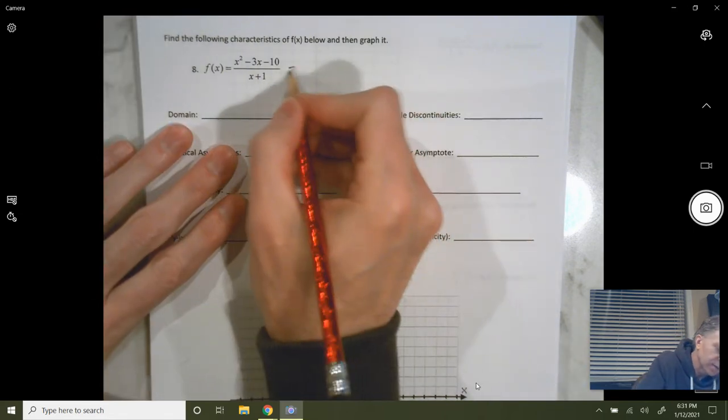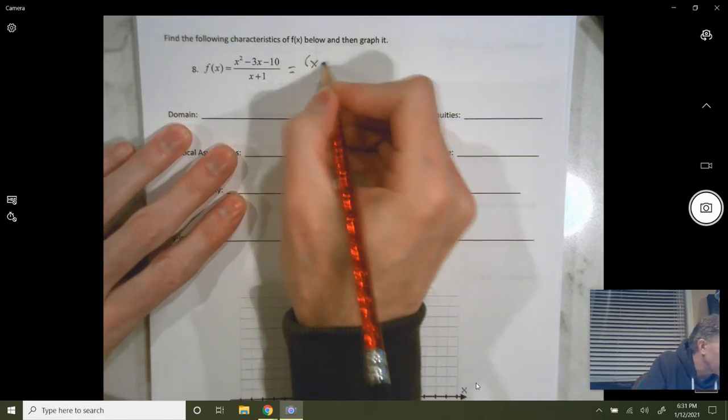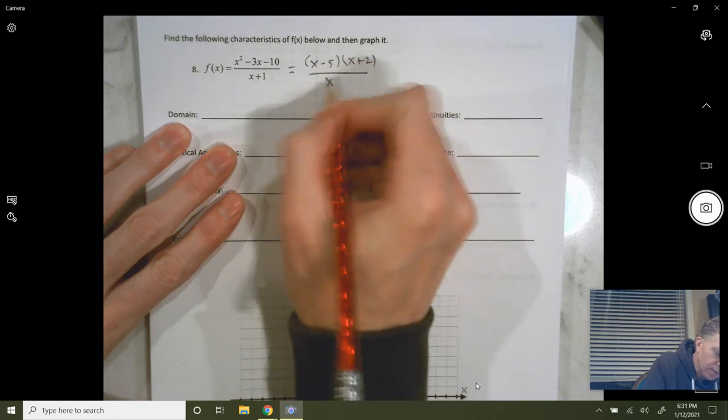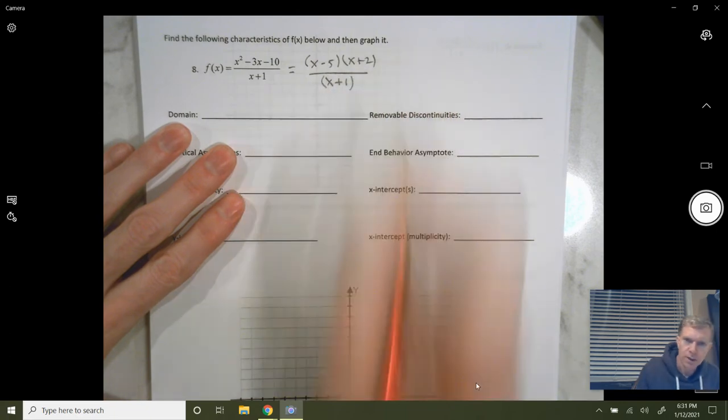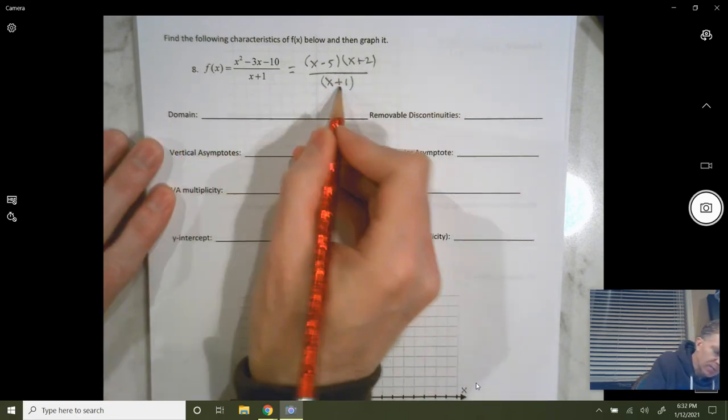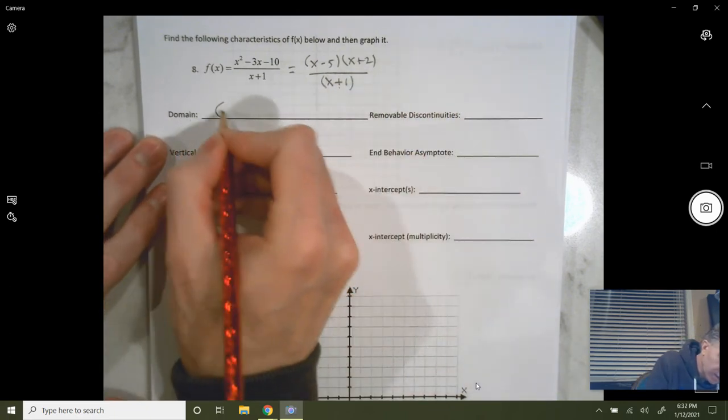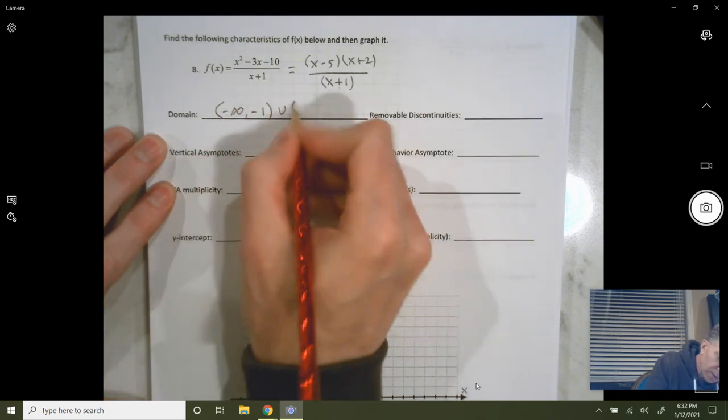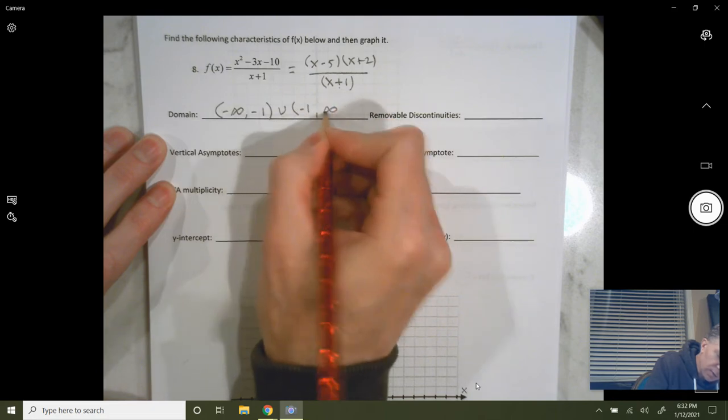Okay, so for this one, first thing we're going to do is factor. That factors into x minus 5, x plus 2 over x plus 1. So your domain is everything except for negative 1, so negative infinity to negative 1, union with, notice we don't include the negative 1, negative 1 to infinity.